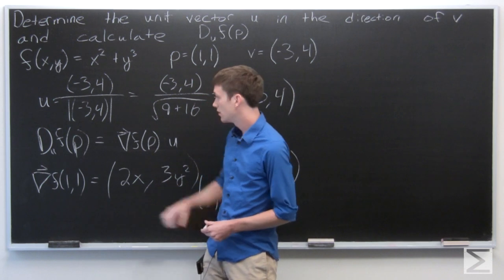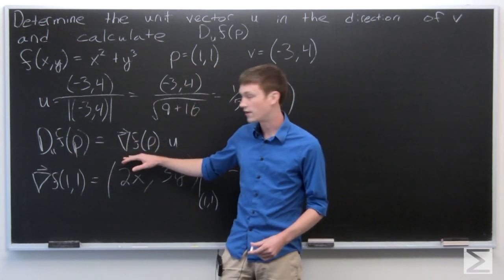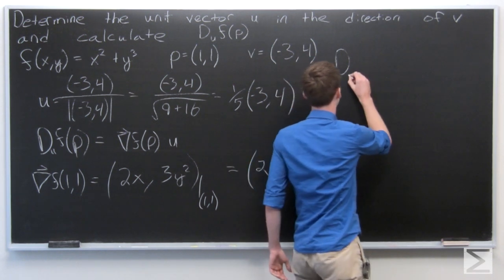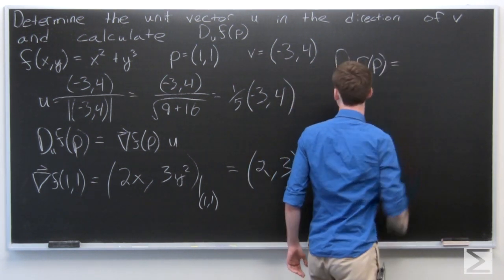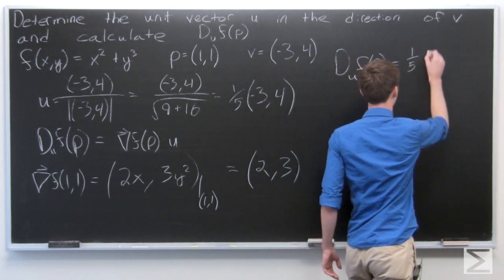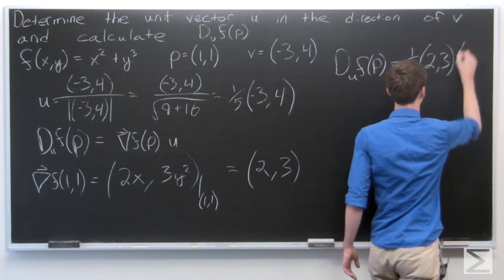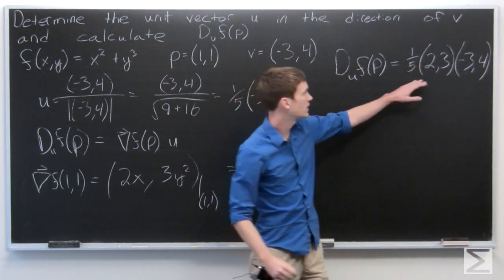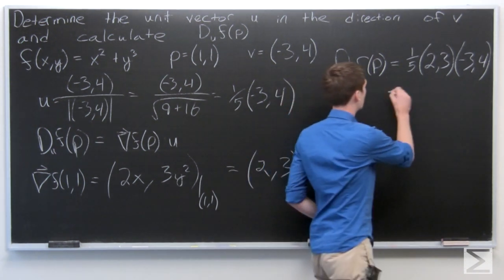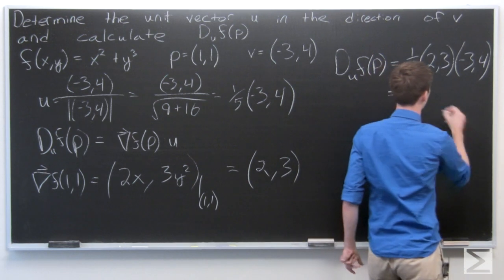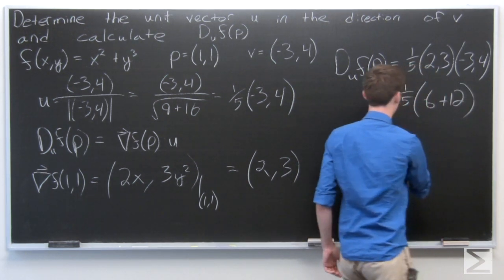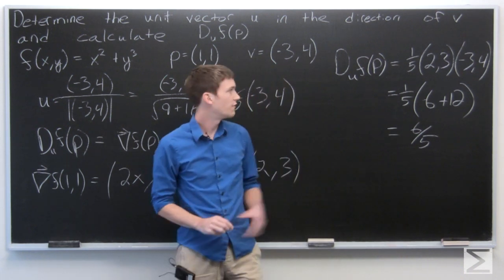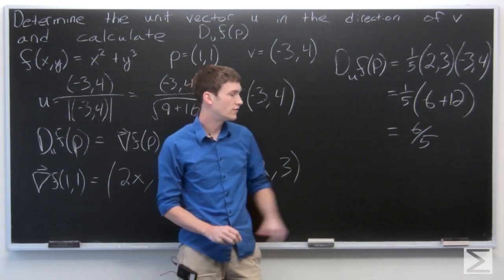So now we want to calculate the directional derivative. We have the gradient vector of f at p and we have our vector u, so we can take that dot product. I just pulled the scalar 1/5 on the outside, and we can take the dot product. And we see that the directional derivative of f at p in the direction of u is equal to 6/5.